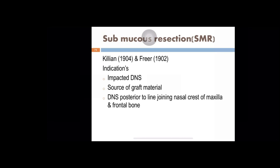In pediatric age group with gross deviation causing functional problems, septoplasty is preferred over SMR. In septoplasty, the Freer's incision is used — a more anterior incision at the mucocutaneous junction. In SMR, the caudal part of the septal cartilage is preserved, so the incision is a little posterior — 2 mm posterior to the mucocutaneous junction in the nasal mucosa — this is called Killian's incision. Indications of SMR include impacted deviated nasal septum, source of graft material, and posterior deviations posterior to the cartilage line, where SMR is safer than septoplasty.